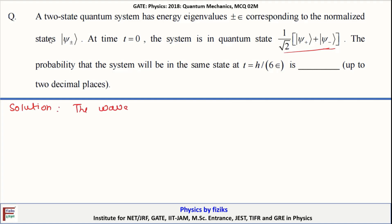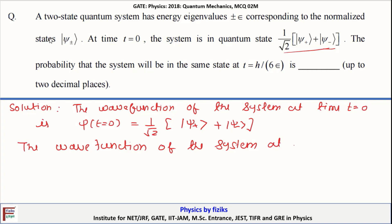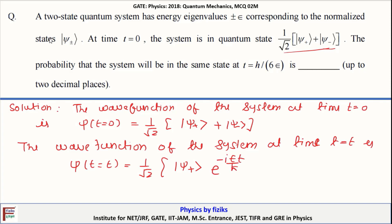The wave function of the system at T equals 0 is ψ(T=0) = (1/√2)(ψ₊ + ψ₋). The wave function of the system at time T is ψ(T) = (1/√2)[ ψ₊ e^(−iεT/ħ) + ψ₋ e^(+iεT/ħ) ].